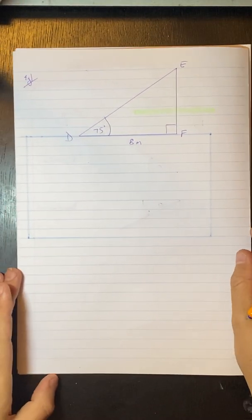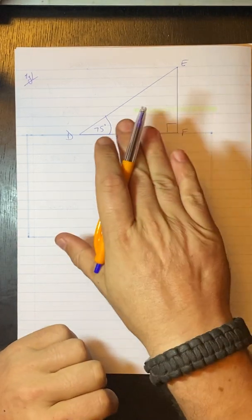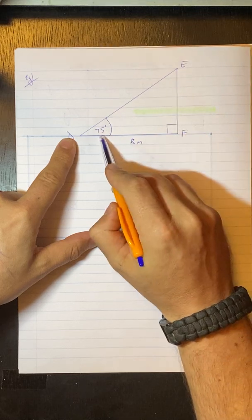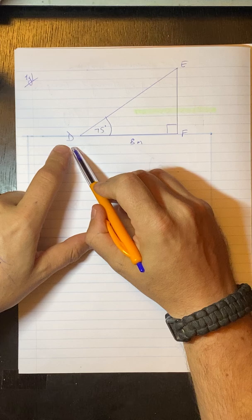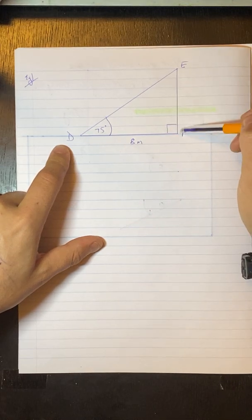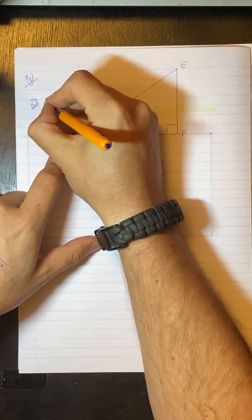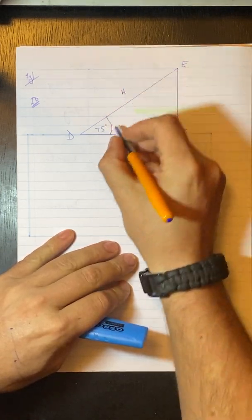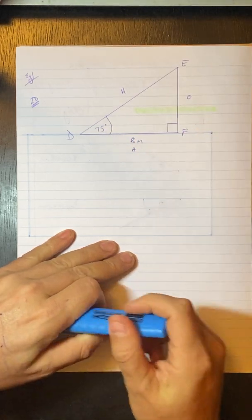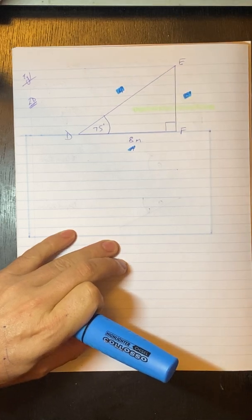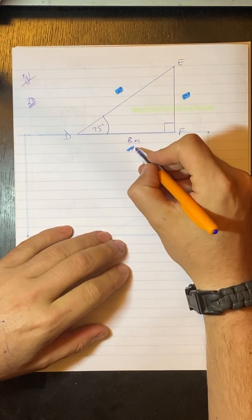Let's have a look at the first example. The angle of elevation from point D to the top of the lighthouse is 75 degrees. If the distance from D to the base of the lighthouse, which is F, is 8 meters, determine the height of the lighthouse to two decimal places. If I put in my adjacent, opposite, and hypotenuse — this is your hypotenuse opposite the 90, this is opposite, and this is adjacent. We're looking for the height of the lighthouse, which is this EF length. So we need the opposite and we know the adjacent.